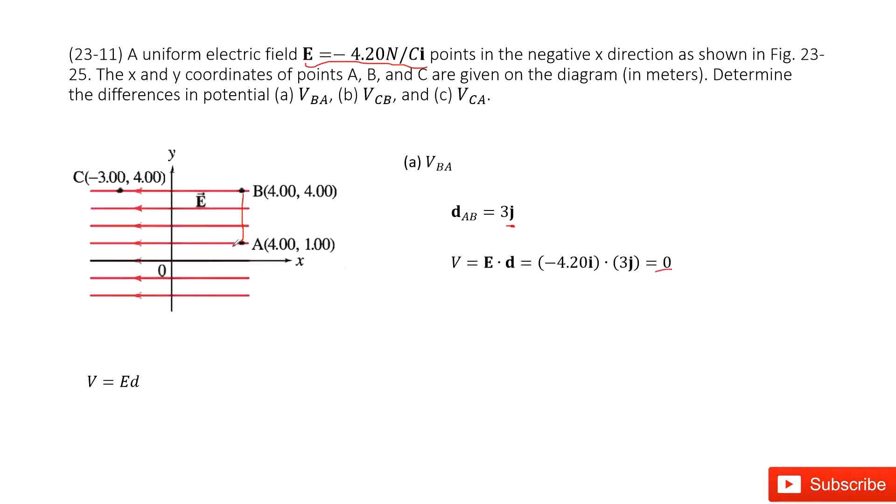That makes sense because, you can see, if we connect A and B, they're just perpendicular to the electric field lines, so they have the same electric potential.